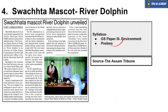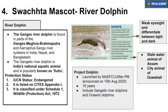The next article is about the Swachhata mascot — the River Dolphin. River Dolphins, also known as Gangetic River Dolphins, are found in the Ganga, Meghna, and Brahmaputra river systems in India, Nepal, and Bangladesh. They are also India's National Aquatic Animal, declared in 2009, and are popularly known as 'Susu.' Their IUCN status is Endangered; they are listed in CITES Appendix I (highest protection, trade is illegal); and they receive Schedule I protection under the Wildlife Protection Act 1972 (highest protection level).